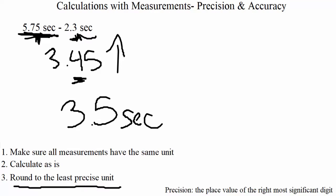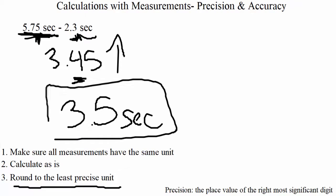So the process is: make sure measurements are in the same unit, calculate, then round the final answer to the least precise of those units.